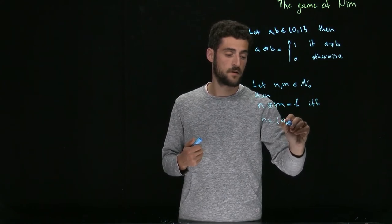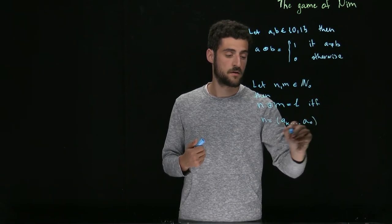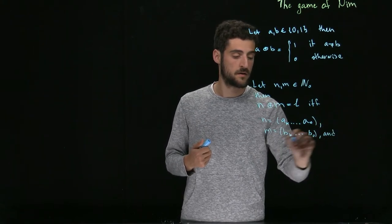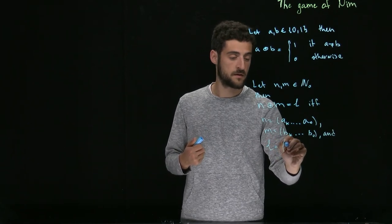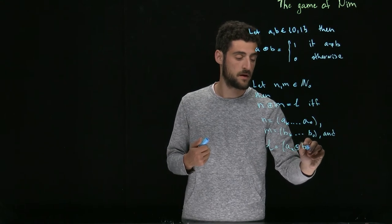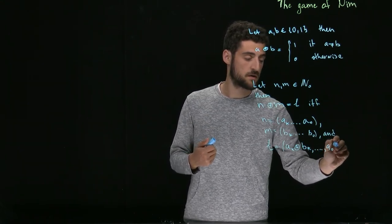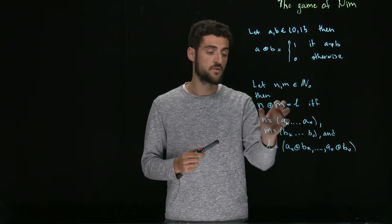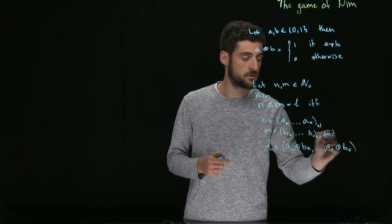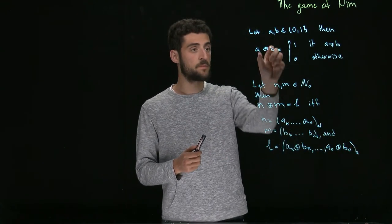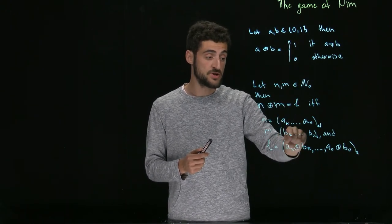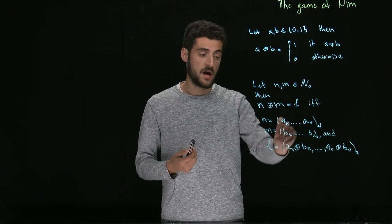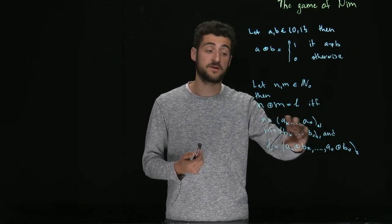In other words, to compute the NIM sum of two integers, you write both of them in base two and apply the sum modulo two to each digit. That's the reason why it's called bitwise — zeros and ones are quite often in computer science called bits, and you apply the operation to every bit of the binary representation of numbers.